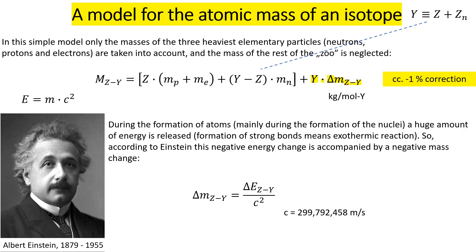From big statistics across all isotopes, you get approximately a minus one percent correction: take the first-order model value and decrease it by approximately one percent to get the experimental value. Of course each isotope is different, so this correction is different for each isotope. The sign is always the same — a negative correction — but it can be minus 0.5% or something else, and the differences between elements are larger than 0.1% in this correction.